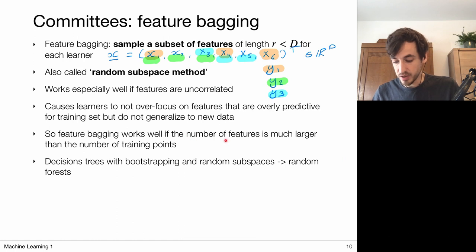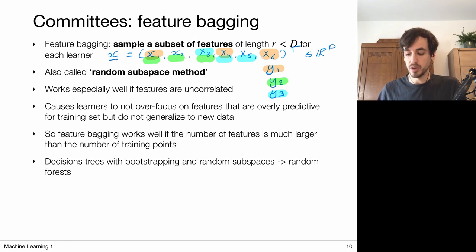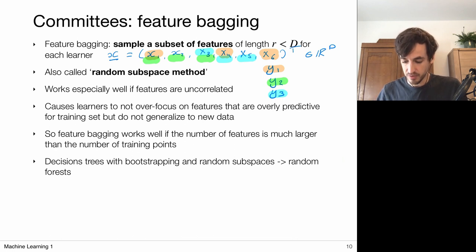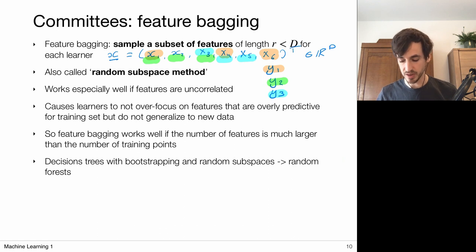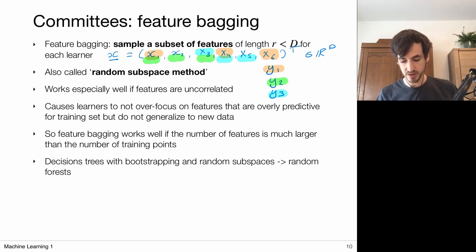Feature bagging works particularly well when the number of features is much larger than the number of training points, because then a model using all features could memorize the training set. Using a random subset of features prevents this. We can also combine bootstrapping with the random subspace method to further reduce dependency between datasets. If we use this combination with a simple classification method called decision trees, what we obtain are random forests — and that will be explained in the last video of this lecture.